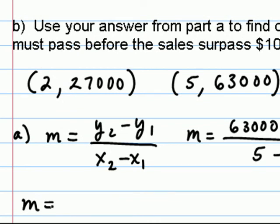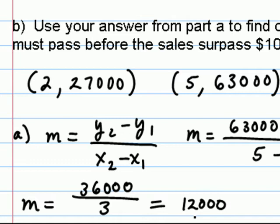Simplifying these numbers, $63,000 minus $27,000 gives us $36,000 divided by 5 minus 2, which is 3. $36,000 divided by 3 gives us $12,000.